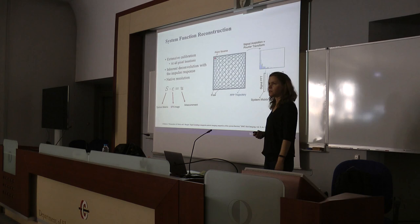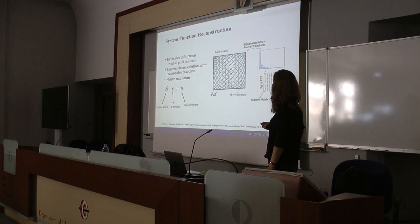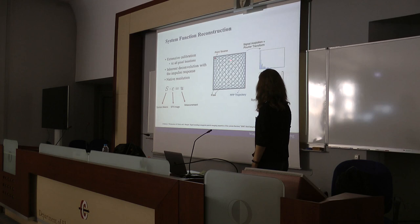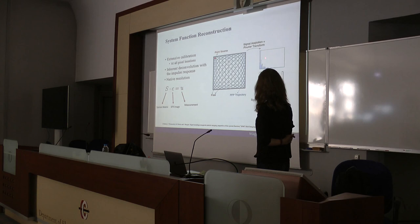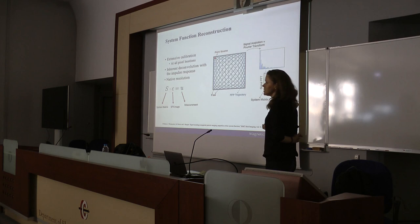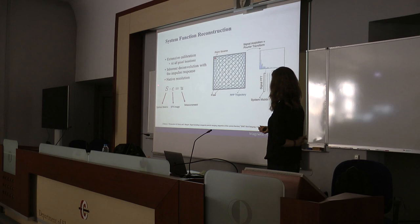There are currently two different image reconstruction schemes used in MPI. The first is system function reconstruction, where a 2D or 3D trajectory sweeps the field-free point in space. Calibration measurements are taken first: the imaging field of view is divided into a grid, a point source is positioned at each grid location, the trajectory is applied, the signal is recorded, its Fourier transform is taken, and it is placed into a system matrix. For a 40 by 40 grid, this process is repeated 1600 times at all positions to build the large system matrix S.